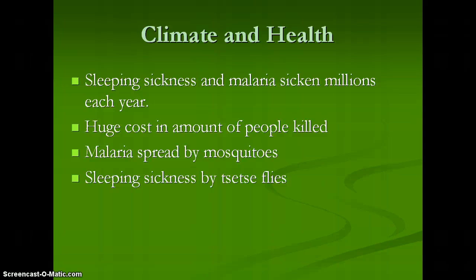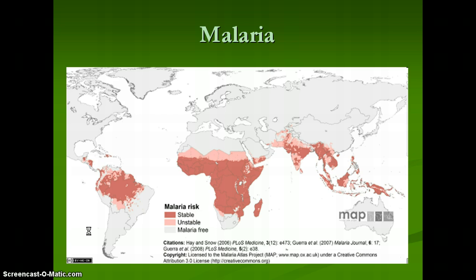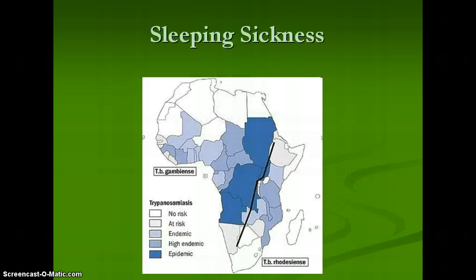Sleeping sickness and malaria sicken millions each year at a huge cost in lives. Malaria is spread by mosquitoes, which thrive in swampy environments, and sleeping sickness also survives in many of those same areas. This map shows the dark red areas where malaria is prevalent. Sleeping sickness is a horrible disease just like malaria, and while it doesn't get as much press, it is a major problem in a lot of places in Africa.